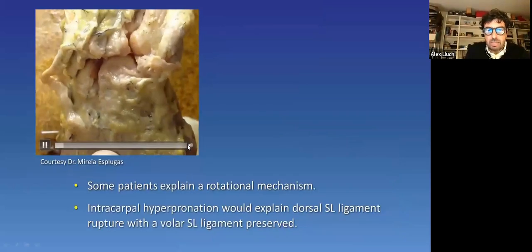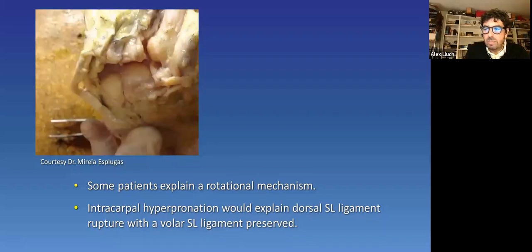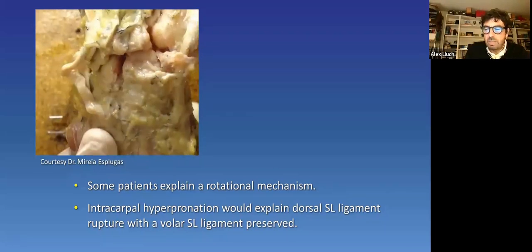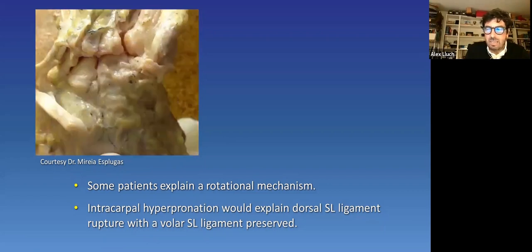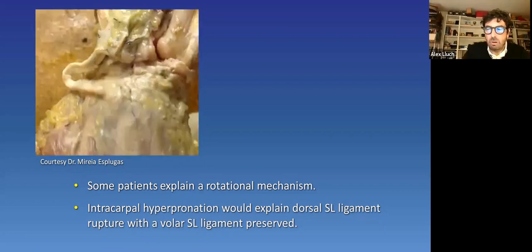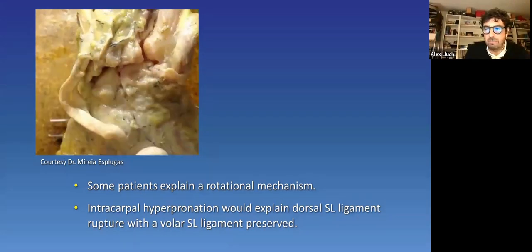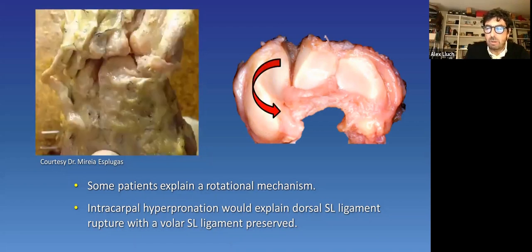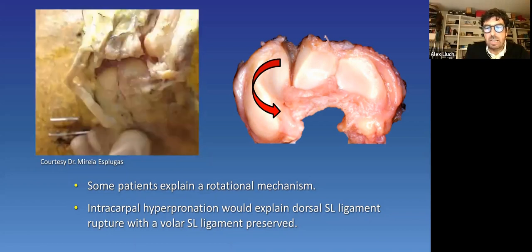But several times we have faced patients that explain a rotational mechanism, like someone operating a drill that suddenly gets blocked, or someone whose body rotates while hanging in a bar. Sometimes they feel a pop after a high pronation of the carpus with a fixed radius. In these cases, as you see in this cadaver wrist, hyperpronation may cause a rupture of the dorsal scapholunate ligament first, as it widens the dorsal scapholunate area. So we believe that scapholunate hyperpronation can explain a dorsal scapholunate ligament and membrane rupture with an intact volar ligament. Thus, the opposite as it's mentioned in the classic mechanism.